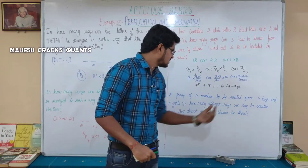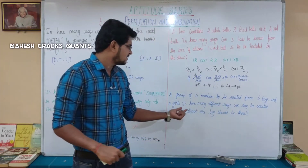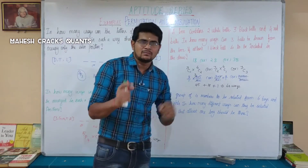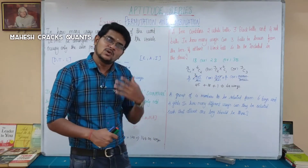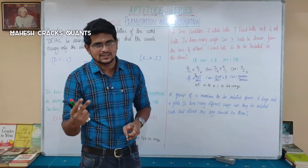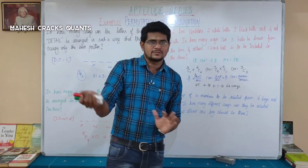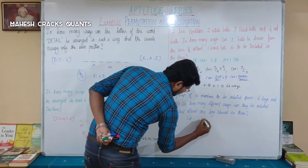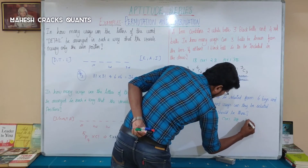Next question: a group of 4 members is to be selected from 6 boys and 4 girls. In how many different ways can they be selected such that at least 1 boy should be there? The cases are: 1 boy, 2 boys, 3 boys, or all 4 members are boys.